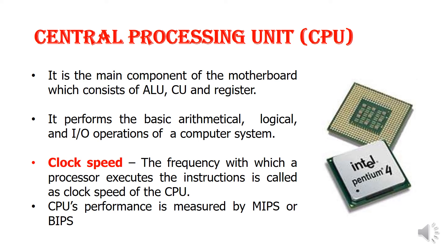Then, clock speed. The speed of the CPU is measured with the help of MIPS or BIPS — Million Instructions Per Second or Billion Instructions Per Second. The frequency with which a processor executes instructions is called the clock speed of the CPU. This is very important for exam purposes.